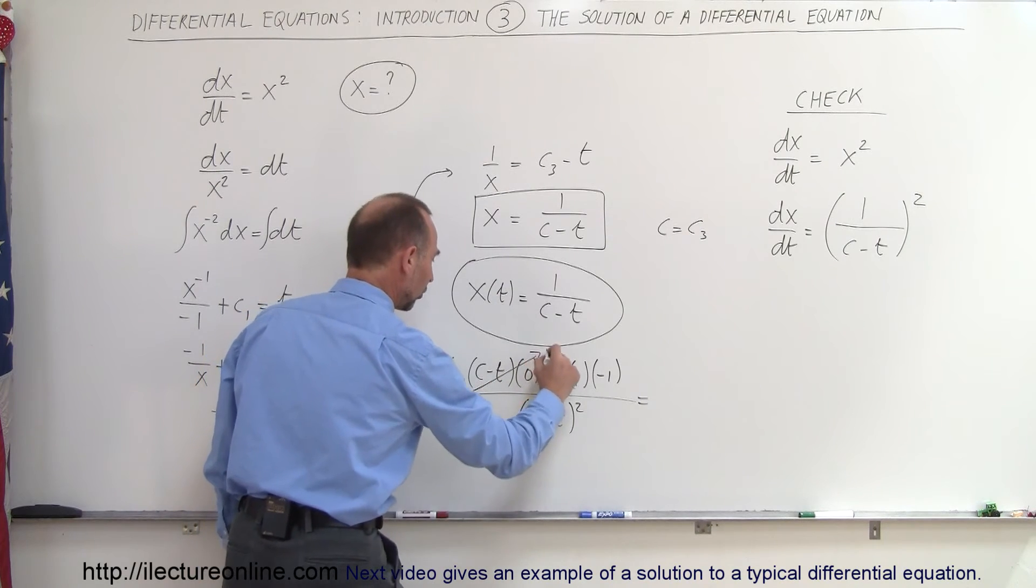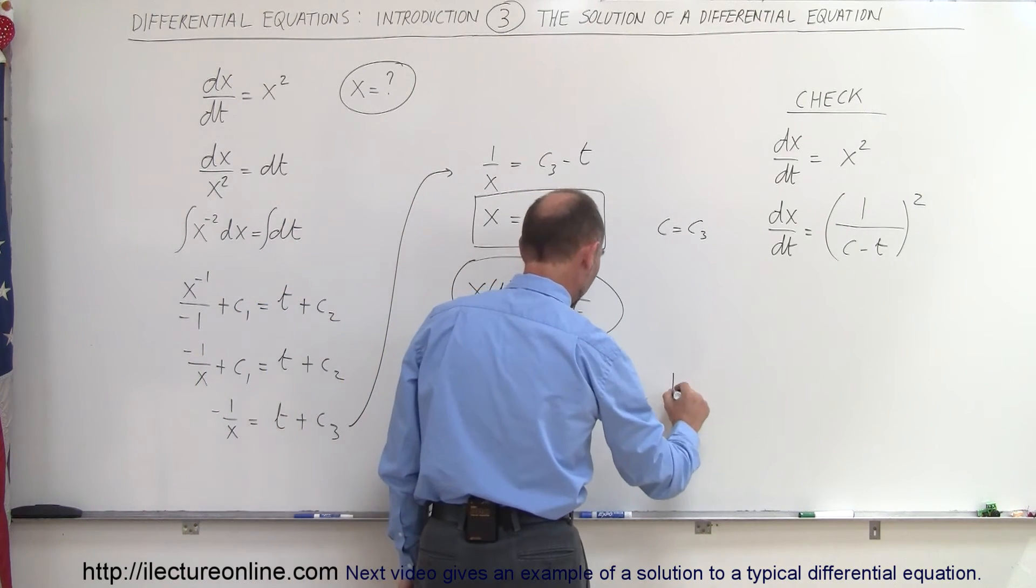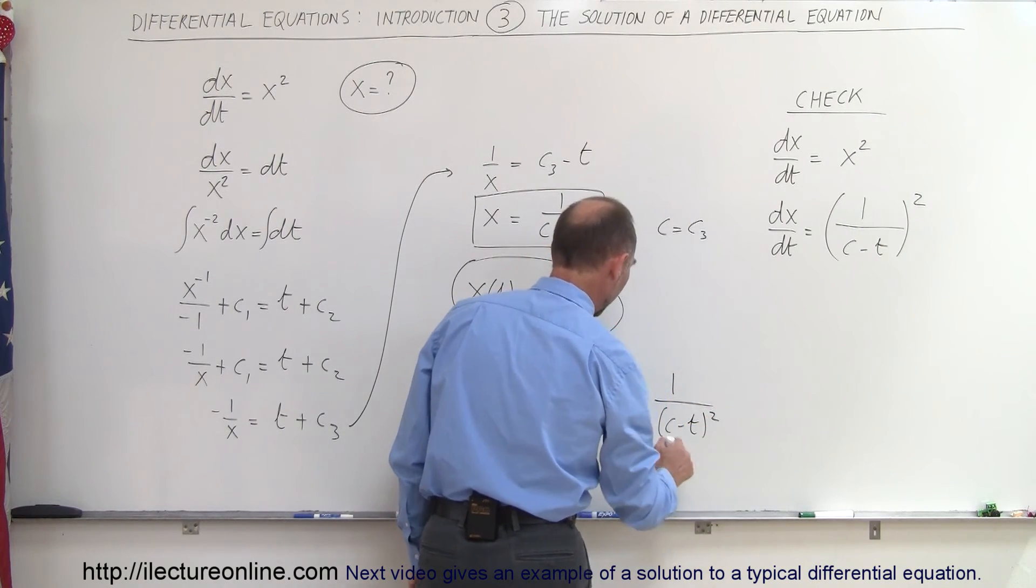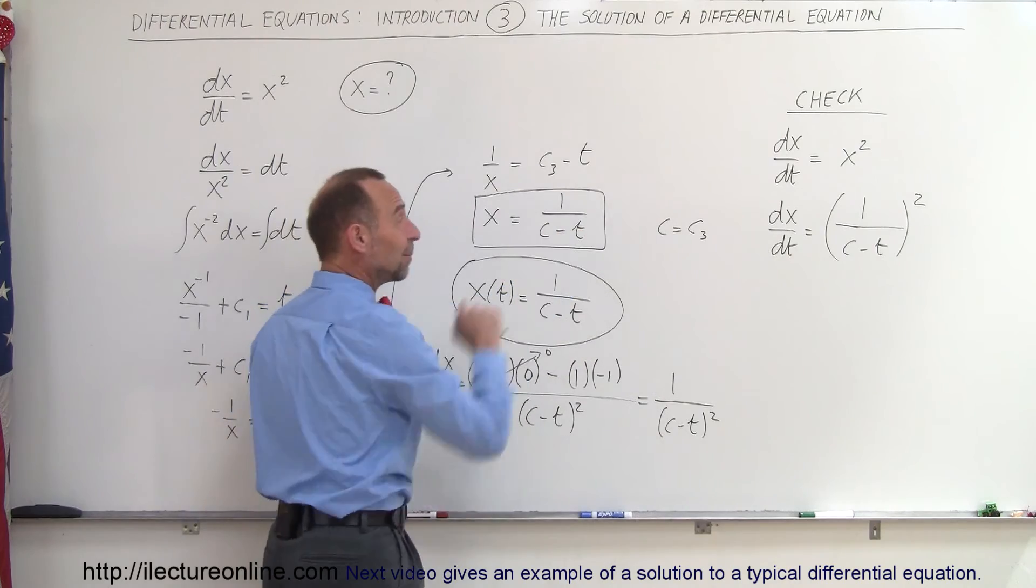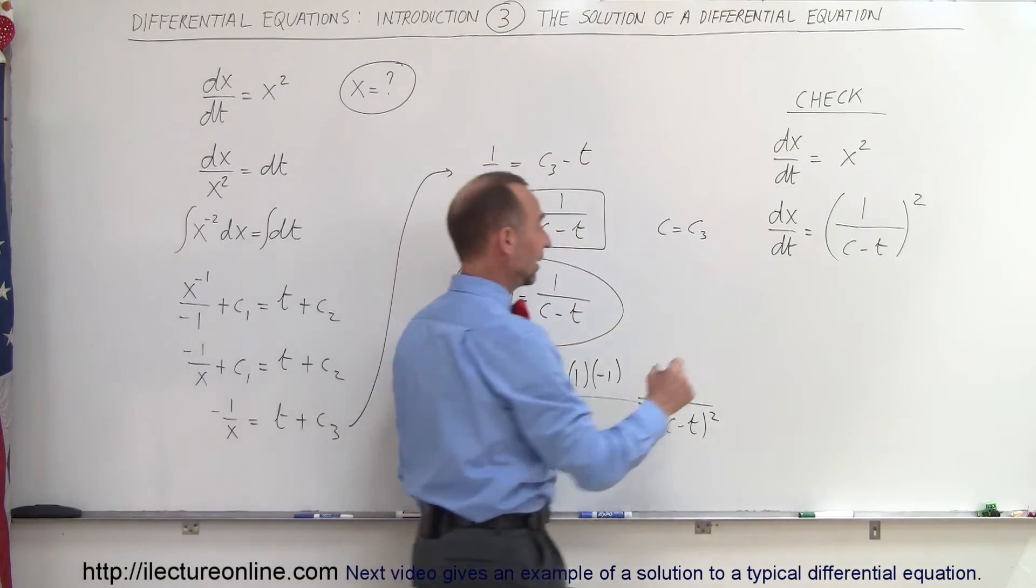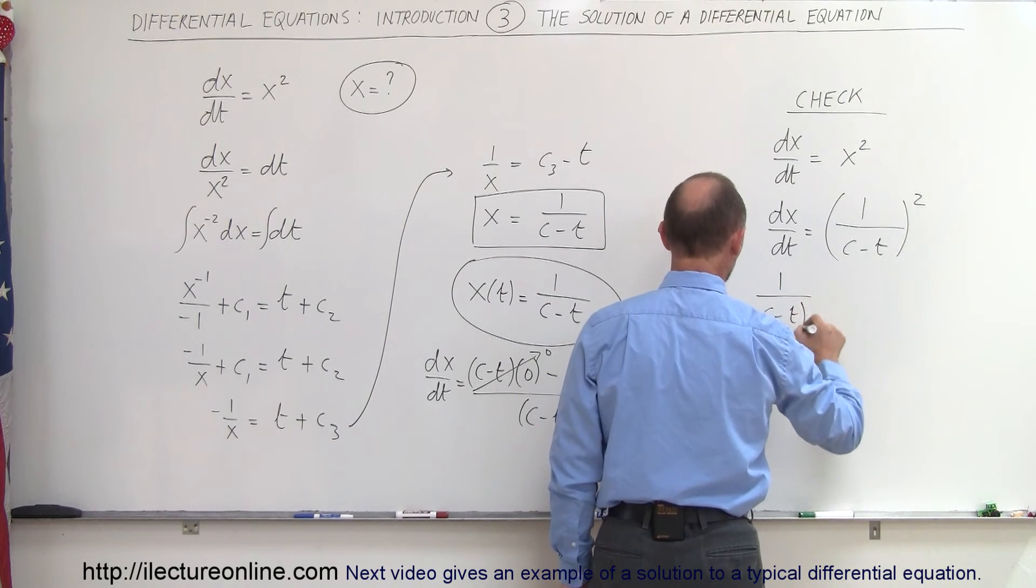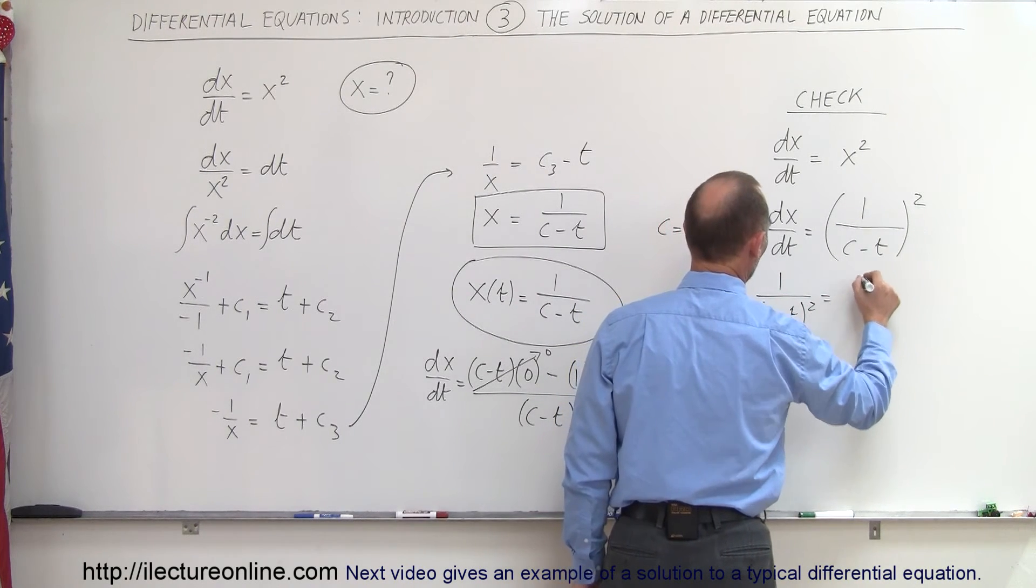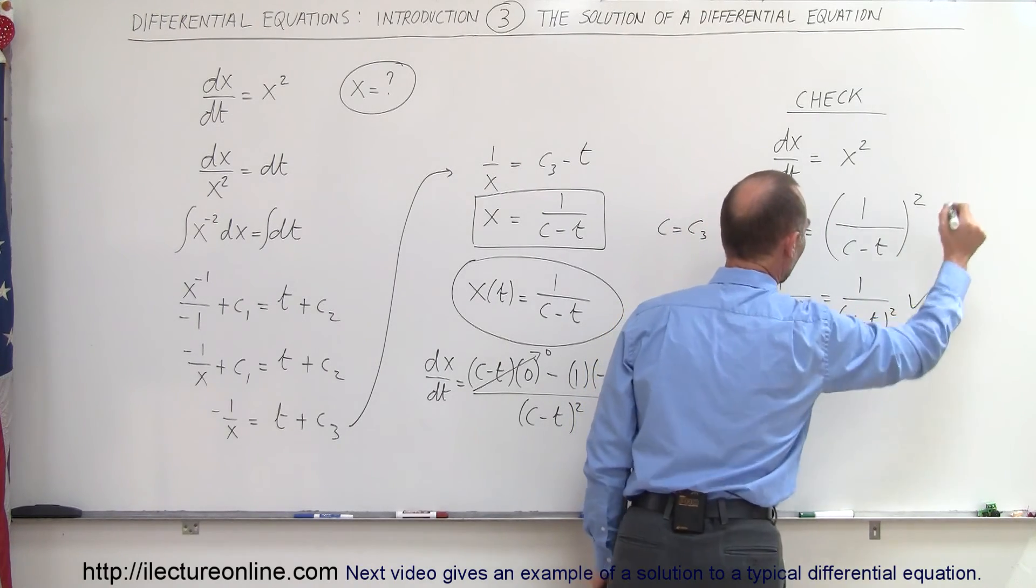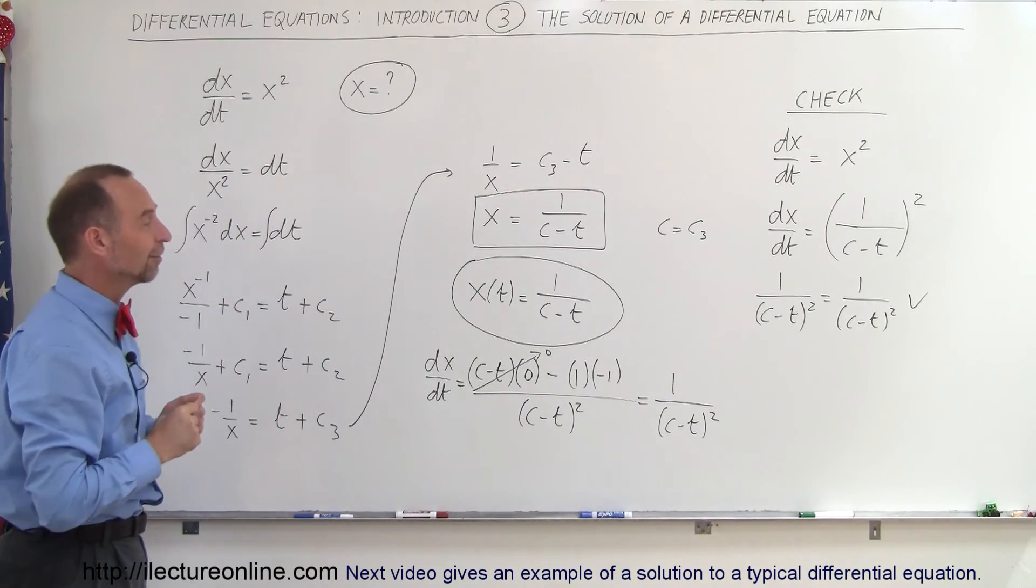Simplifying that, notice that this portion goes to 0, and a minus times a minus is plus, so we have a plus 1 divided by the quantity c minus t quantity squared. And notice that is the left side of my equation. So when I replace the dx/dt by that, I can then say that 1 divided by c minus t quantity squared is equal to 1 divided by the quantity c minus t quantity squared. And therefore I verified that I got the correct solution for my differential equation.